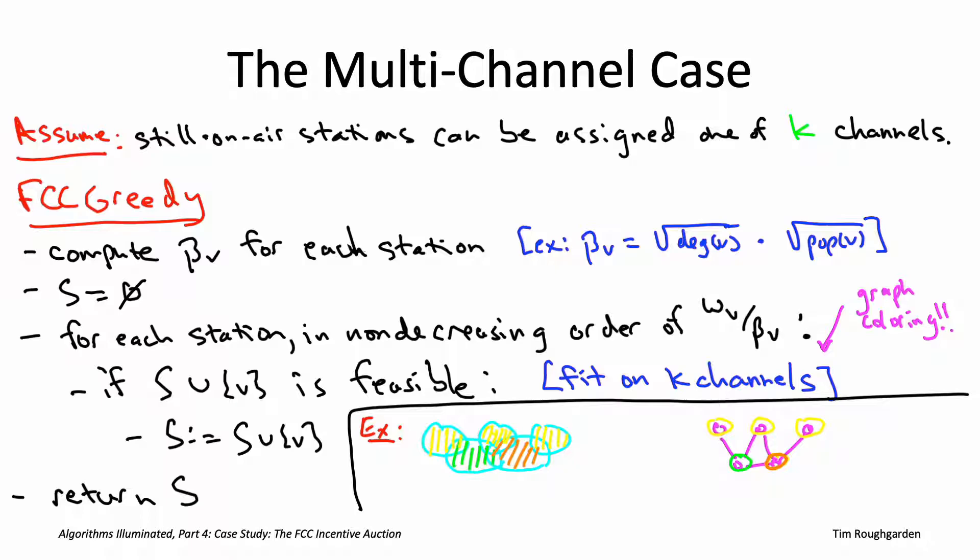So the five stations on the left would be feasible if you have three available channels and it would not be feasible if you only had two available channels. And in the corresponding graph on the right, that just corresponds to this graph being three colorable but not being two colorable. It's easy to see that it can't be two colorable because it has the triangle and all of the vertices of the triangle have to get distinct colors. And then the same coloring is a proper, is a feasible three coloring of this magenta graph.